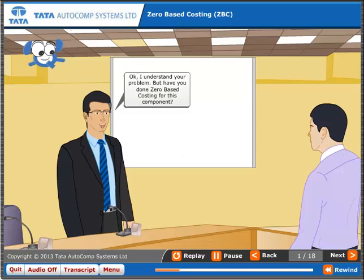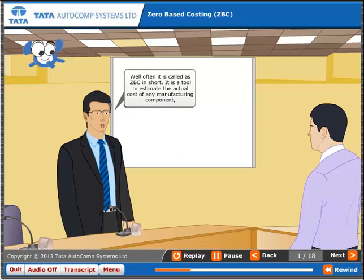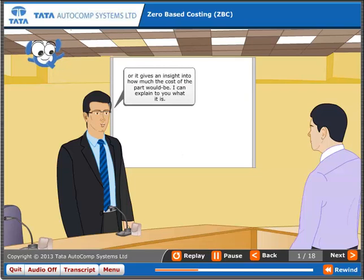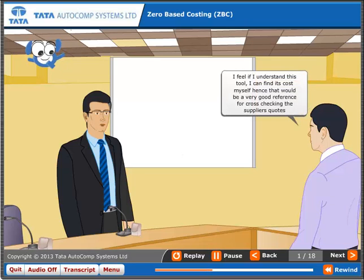I understand your problem. But have you done zero-based costing for this component? What do you mean by zero-based costing? Well, it is often called ZBC in short. It is a tool to estimate the actual cost of any manufacturing component, or it gives an insight into how much the cost of the part would be. I definitely want to understand this tool. I feel if I understand this tool, I can find its cost myself. Hence, that would be a very good reference for cross-checking the supplier's quotes.